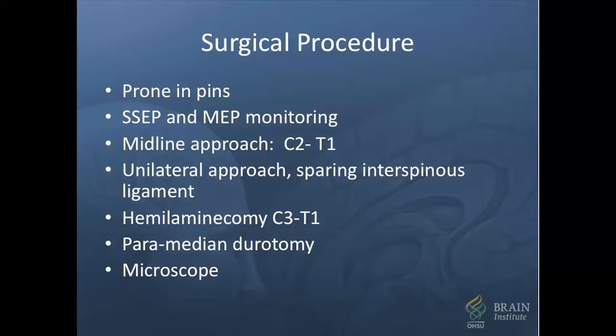The DRES lesion procedure is performed with the patient under general anesthesia, prone and in pins. A midline skin incision is made from C2 to T1, and once the fascia is exposed and the spinous process is identified, the procedure becomes unilateral on the side of the injury, sparing the spinous processes and interspinous ligament. A hemi-laminectomy is performed from C3 to T1. I find it more efficient to perform a more extensive laminectomy than possibly needed, rather than performing additional laminectomy after the dura has been opened, if the fully denervated segment of the spinal cord is not fully exposed initially.